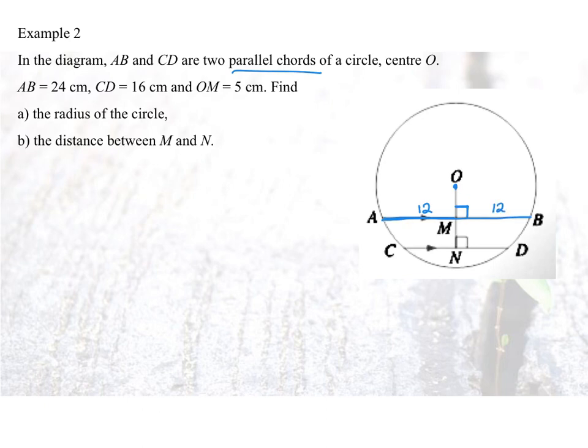What about CD? CD is given to be 16cm. And I notice there is also a 90 degree in my angle. So hence, ON bisects CD into two equal halves. And I will get CN to be 8cm on each side. Question says that ON is 5cm. Find the radius of the circle.